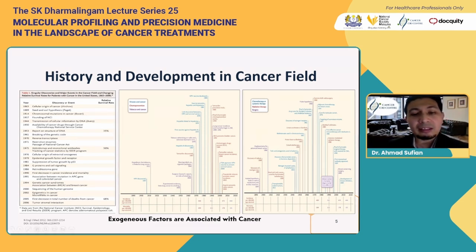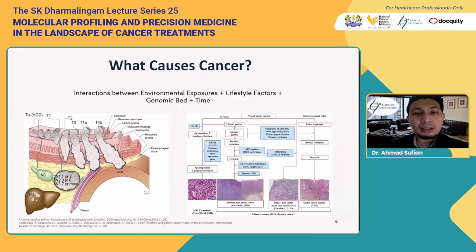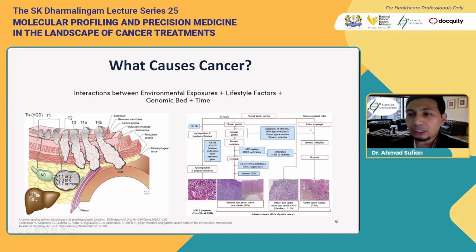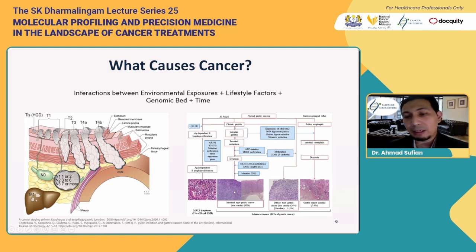So the exogenous factors are associated with cancer. Looking at these two diagrams, on the right side we can see normal gastric mucosa. When there is an exposure to infection like Helicobacter pylori, or inflammation in the context of gastroesophageal reflux disease, what can happen downstream is cellular changes and also genetic changes, which then lead to the development of cancer.